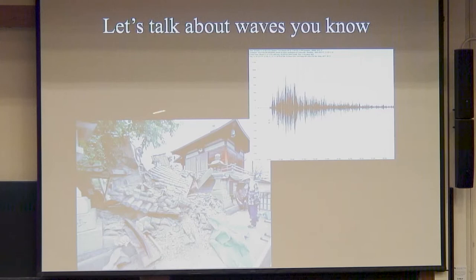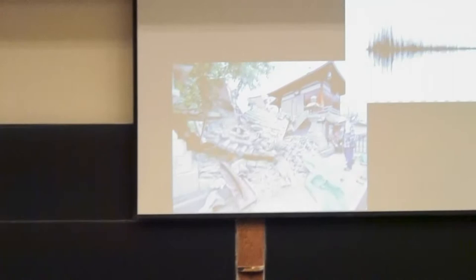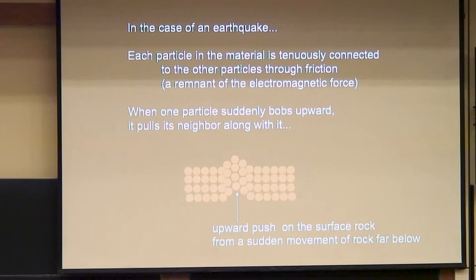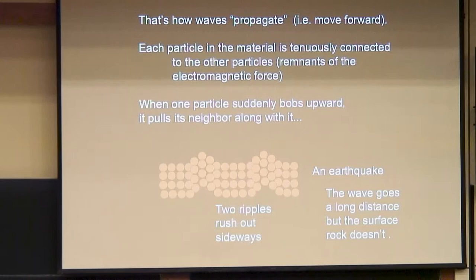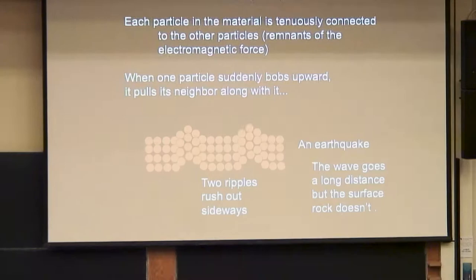Let's talk about waves. This is actually a picture of Osaka — there was just a huge earthquake there. The wave most in the news is the earthquake wave. Each particle in the earth is tenuously connected to the other particles through friction, a remnant of the electromagnetic force. If something thrusts a bit of earth upward, it pulls along its neighbors, which pull along their neighbors, creating a wave moving outward. The particles are moving up and down even though the wave is moving off in two different directions.